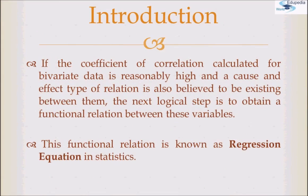If the coefficient of correlation calculated for bivariate data is reasonably high and a cause-and-effect type of relationship is also believed to exist between them, then the next logical step is to obtain a functional relationship between these variables. This functional relation is known as the regression equation in statistics.